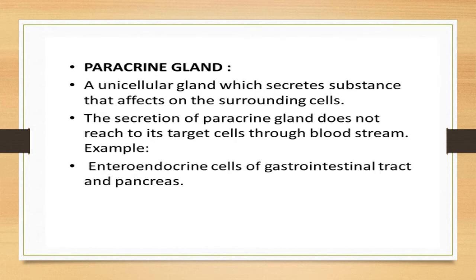Paracrine glands are unicellular glands that secrete substances affecting the surrounding cells. The secretions of paracrine glands do not reach target cells via the bloodstream; instead, they secrete into the surrounding tissue and are carried by diffusion to nearby cells. Examples include the enteroendocrine cells of the gastrointestinal tract and the pancreas.